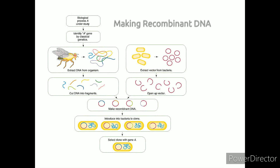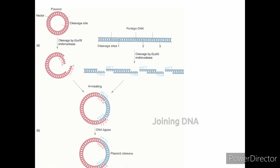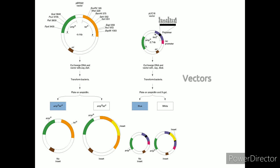Steps of Genetic Recombination Technology: isolation of genetic material, restriction enzyme digestion, amplification using PCR, ligation of DNA molecules, insertion of recombinant DNA into host, and isolation of recombinant cells.